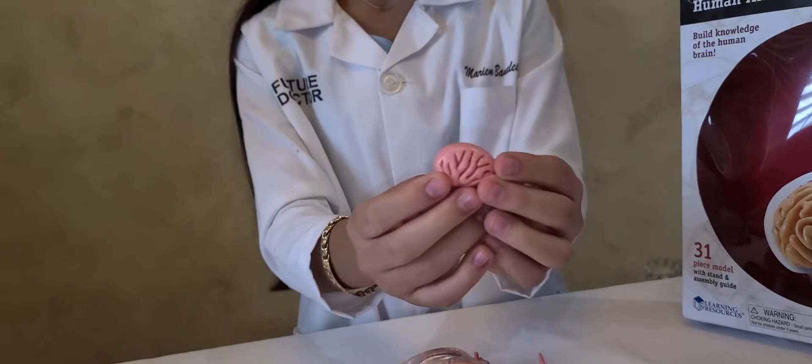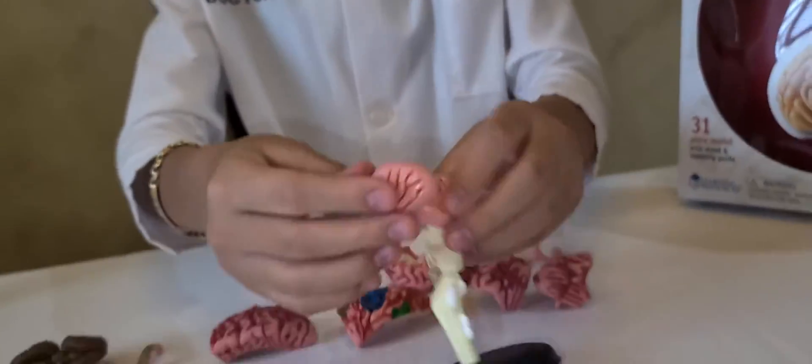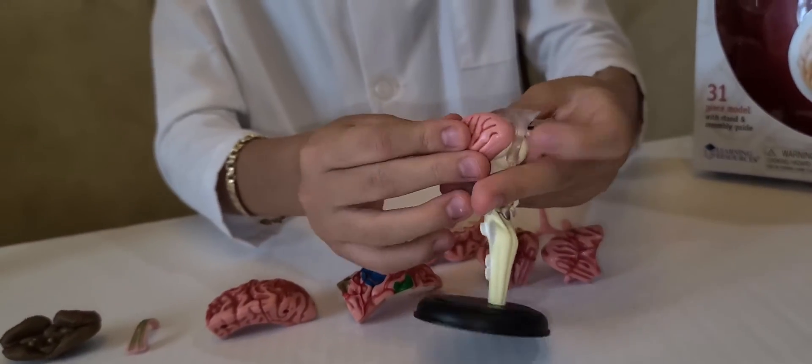The piece after that is called the lentiform nucleus and it helps us learn new things. This one will go right here.